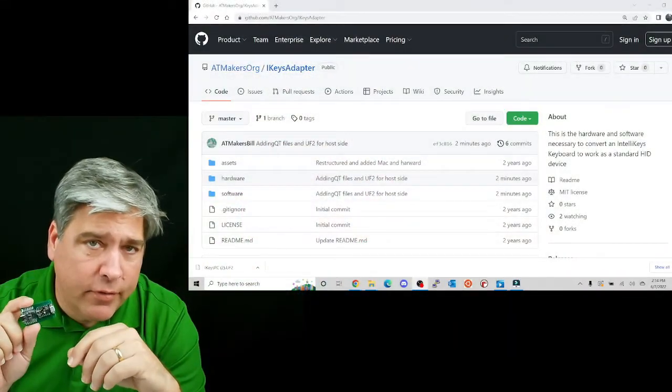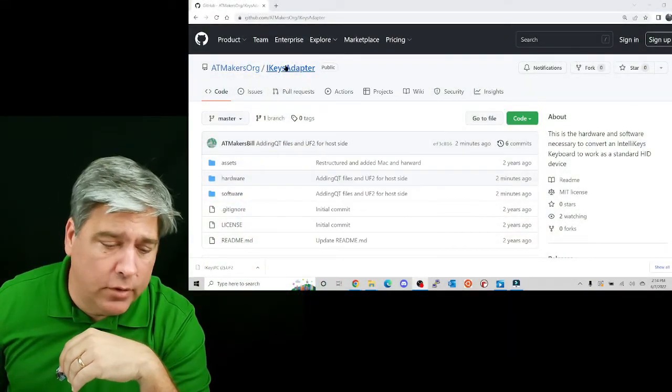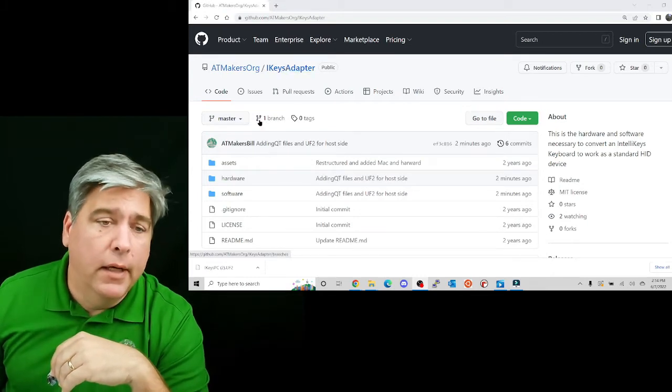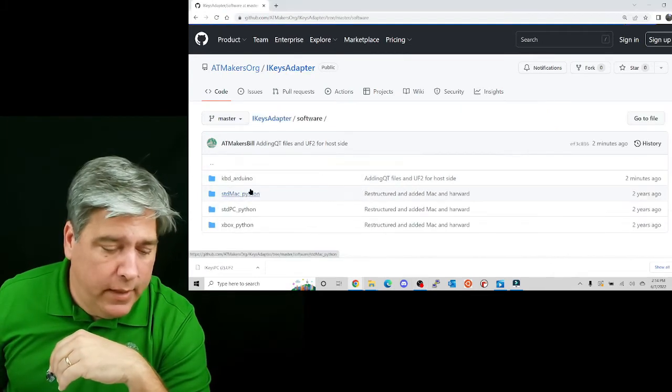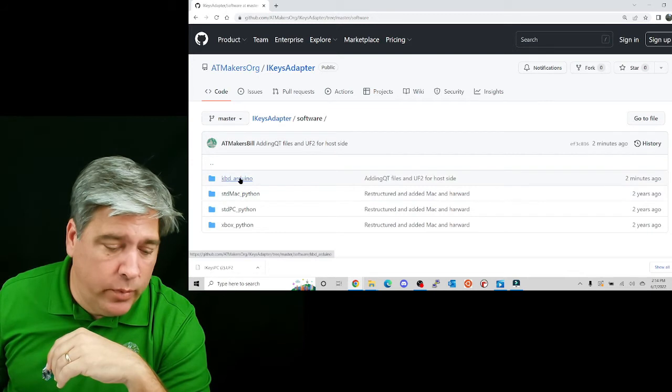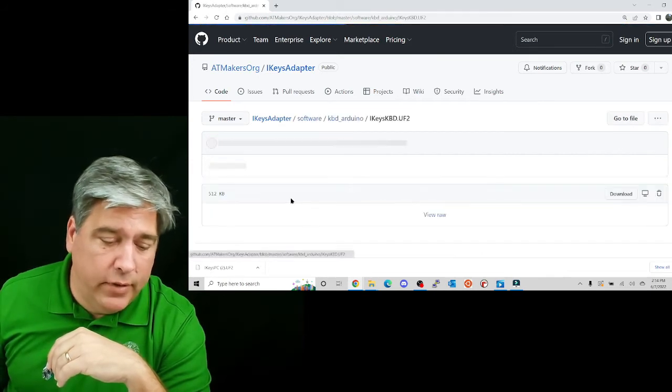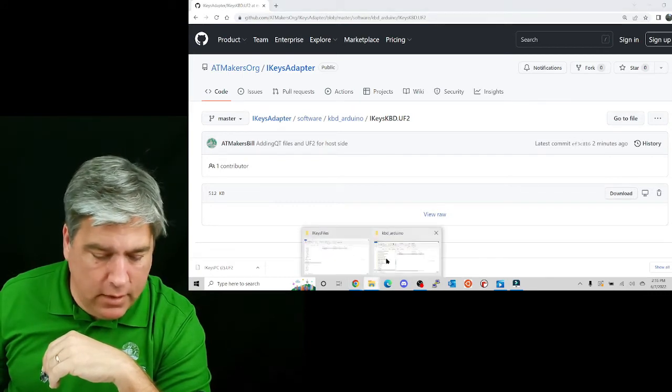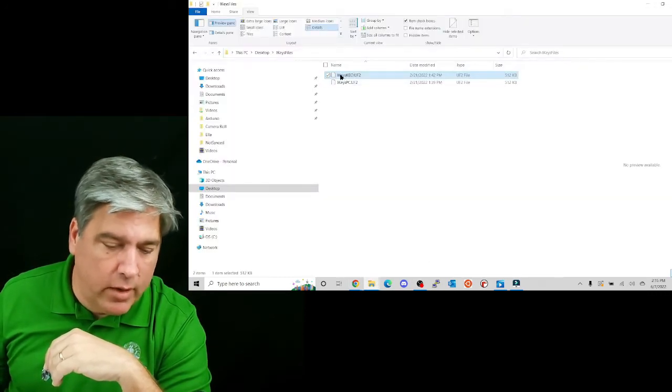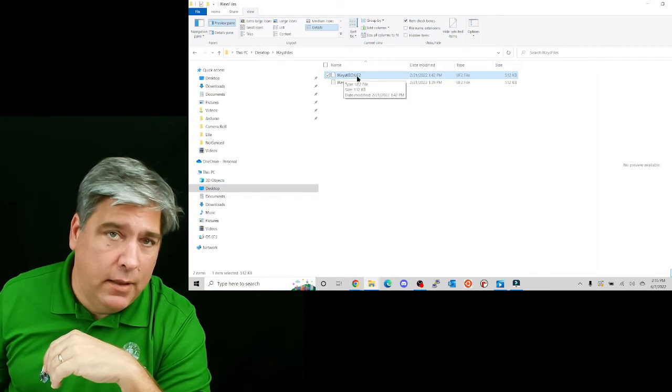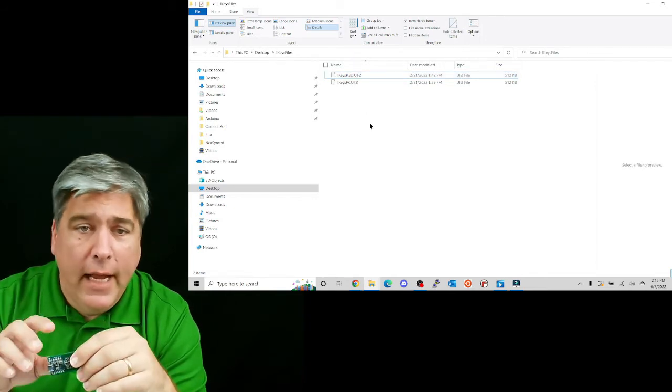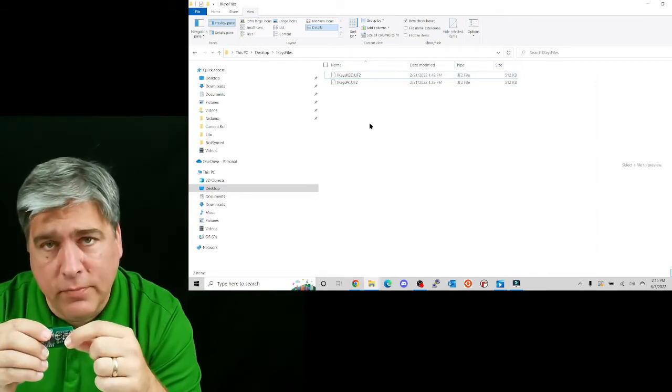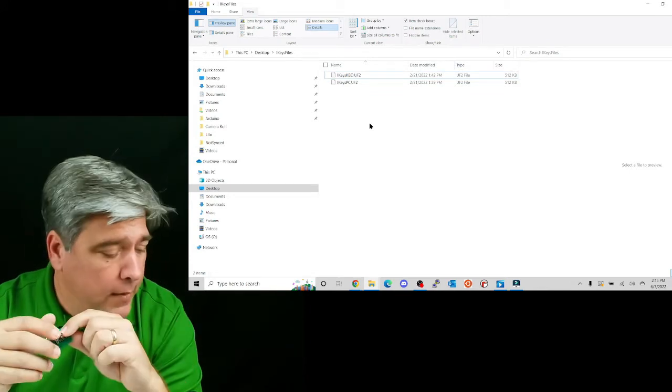Because I'm going to make an IntelliKeys adapter out of this, I'm going to go to the iKeys adapter GitHub page. I'm going to go under software. And the first thing I'm going to get is the Arduino side, the keyboard side. And I'm going to download this UF2 file. I've already downloaded it here. iKeysKBD.UF2 file. And that's what I'm going to load onto this board in order to make it work.